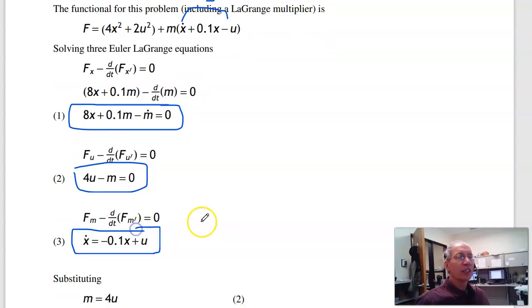The Euler-Lagrange equation with respect to m has to be satisfied. There's no m_dot, so we just get this term, which are the dynamics of the system. Again, not too surprisingly, the solution has to satisfy the system's dynamics. Kind of a given. Three equations, three unknowns, solve.